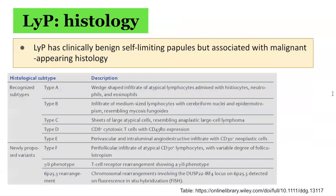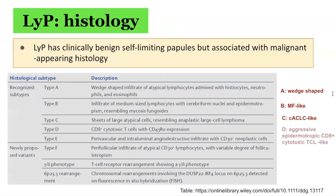The histology of lymphomatoid papulosis shows significant variation, which may in part correlate with the age of the sampled skin lesion. Several histological types have been described: type A is the most classic and common, making up over 75% of cases. Other forms include type B, which is similar to mycosis fungoides; type C, most similar to cutaneous anaplastic large cell lymphoma; type D, similar to aggressive epidermotropic CD8 positive cytotoxic T-cell lymphoma; type E, predominantly perivascular and intraluminal; and type F, predominantly follicularly based. Different types of LYP may occur concurrently in different lesions in the same patient, and the subtype has no treatment or prognostic implications.